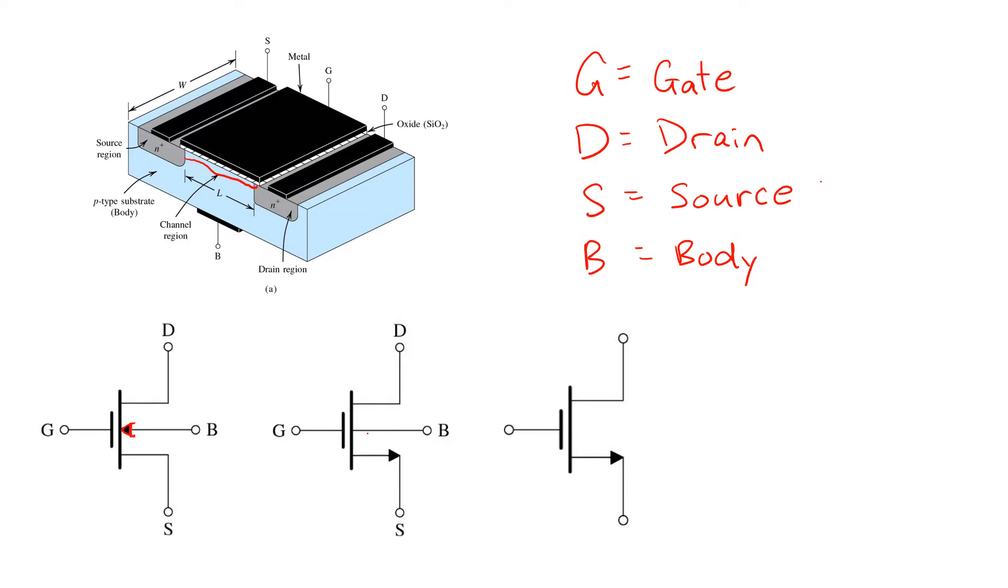The second symbol over here looks a little different. It has an arrow pointing out of the source to remind us that in its normal operation, the drain will have a higher voltage than the source, and so a drain current will flow into the drain and out the source.